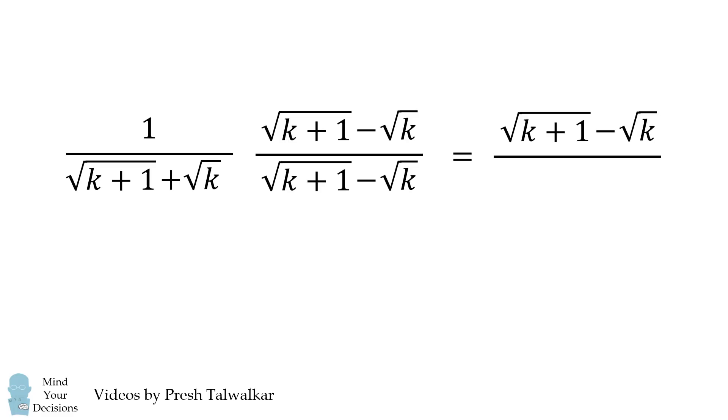Now the denominator will be a difference of squares. Here we have a plus b and here we have a minus b. Thus the result will be a squared minus b squared which simplifies to be k plus 1 minus k. The terms k will cancel out and we're just left with 1. Thus we have the square root of k plus 1 minus the square root of k.